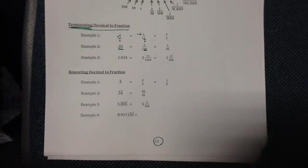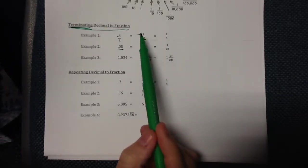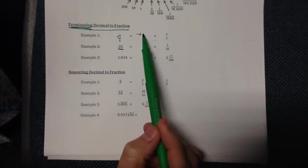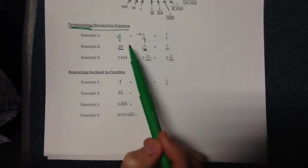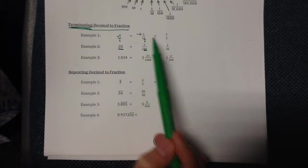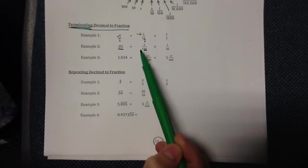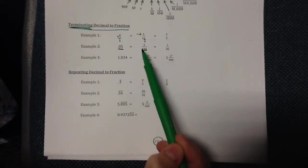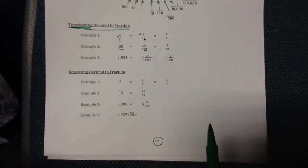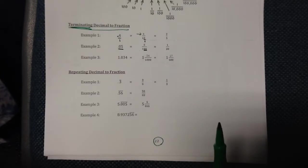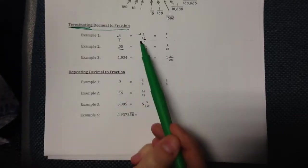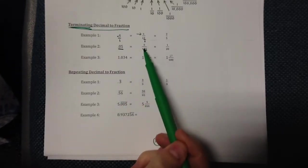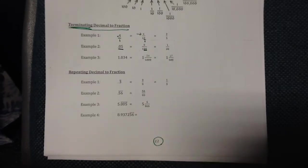And of course you can always simplify your fractions — don't forget to do that. Four tenths: divide four by two, you get two; ten divided by two is five. Five one-hundredths: five divided by five is one, and one hundred divided by five is twenty. You want to find the biggest number that will go into both the top and the bottom and divide to simplify.